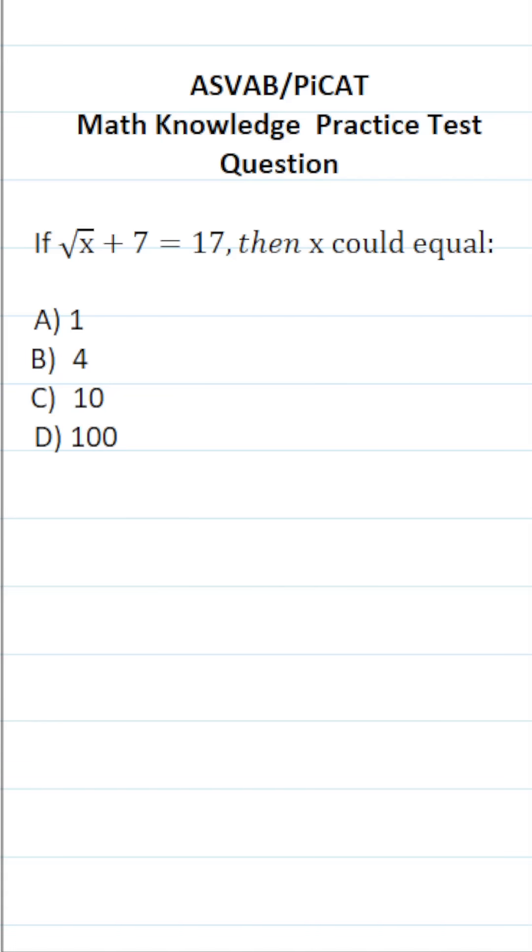This math knowledge practice test question for the ASVAB and PICAT says if the square root of x plus 7 equals 17, then x could equal.